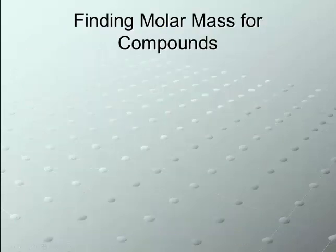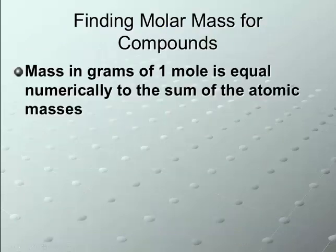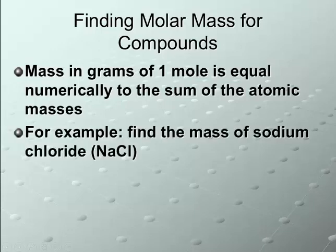So, let's look at how to find those. The mass in grams of one mole is equal to the sum of the atomic masses. So, if we're looking at sodium chloride, we see that we have one sodium and one chlorine.